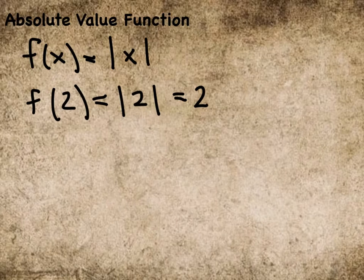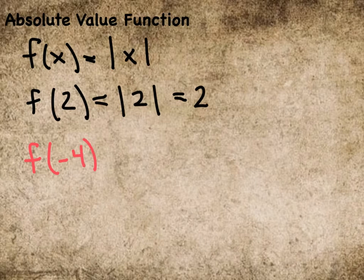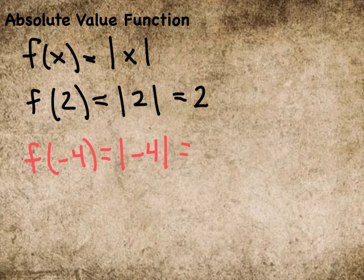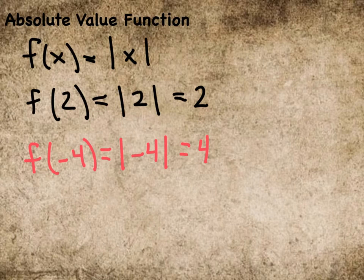In a likewise manner, if we put in negative 4 into the absolute value brackets, it comes out as 4 because negative 4 is just purely 4 away.